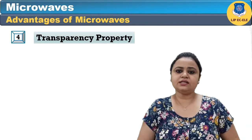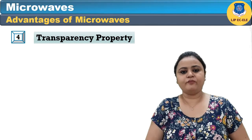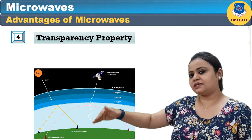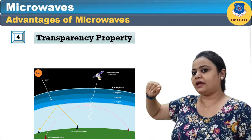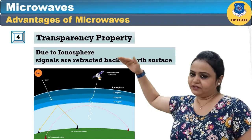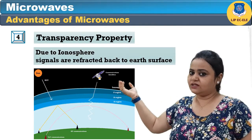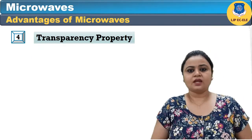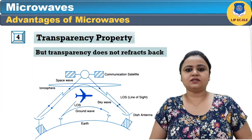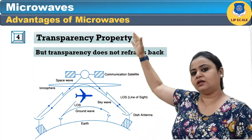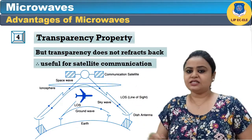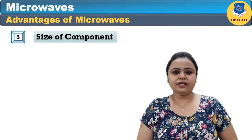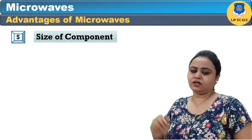The next advantage is the transparency property of microwaves. In sky-wave propagation, the signal is transmitted from earth to satellite but is reflected back after the ionosphere, which fades the signal. But microwaves transmit over the ionosphere layer, and due to this transparency property, microwaves are used in satellite communication.